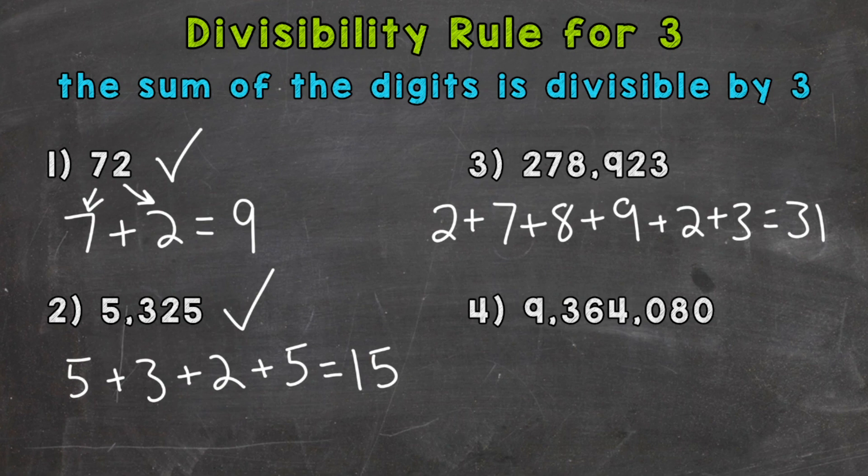So again, 31 not divisible by 3. Therefore, 278,923 is not divisible by 3 either.